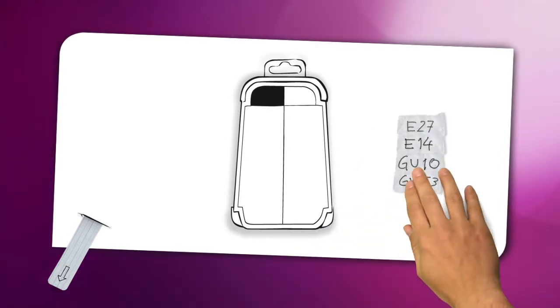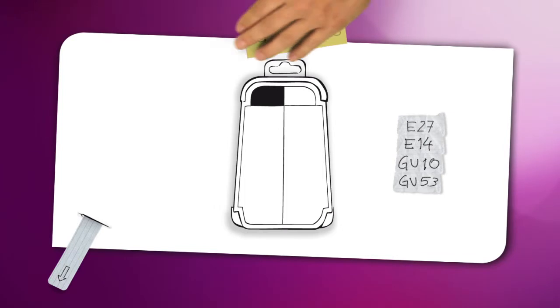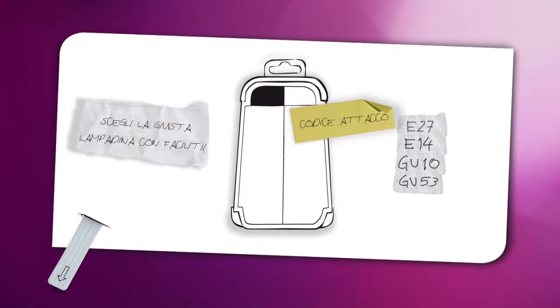Just make a note of the code on your light fixture or on the bulb you want to replace. Then look for the corresponding code on Philips packaging so you can easily choose the right bulb that perfectly matches your lighting needs and create the light effect you desire.